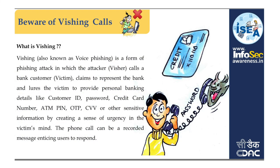Quishing is one method of social engineering over the telephone system, most often using features facilitated by Voice over IP (VoIP) to gain access to private personal and financial information from the public for the purpose of financial reward. The term is a combination of voice and phishing.